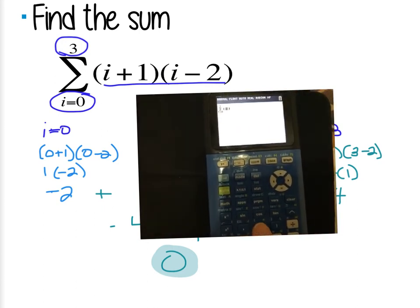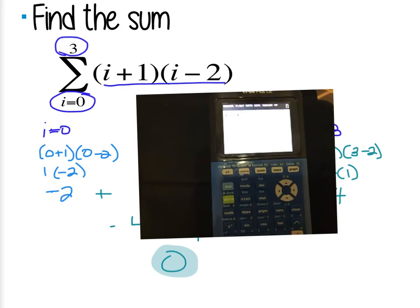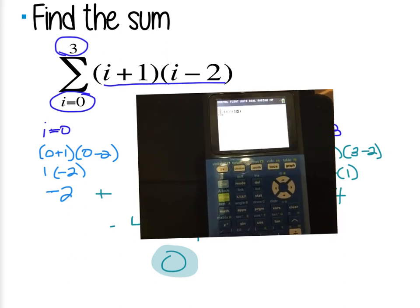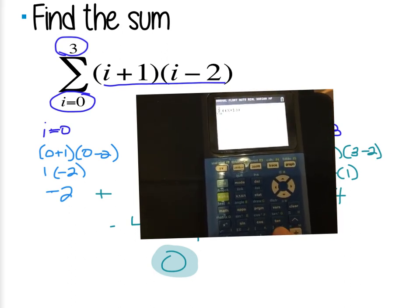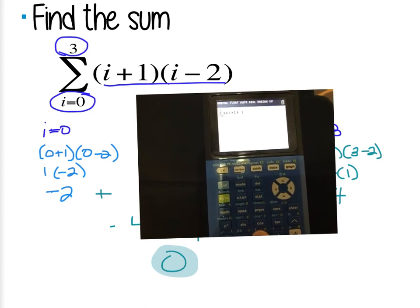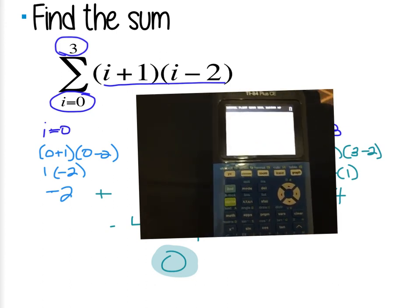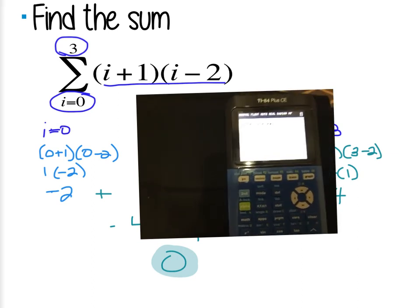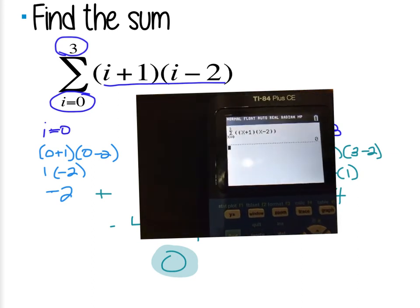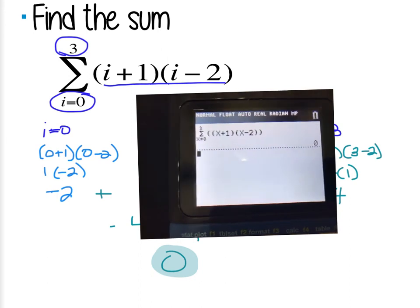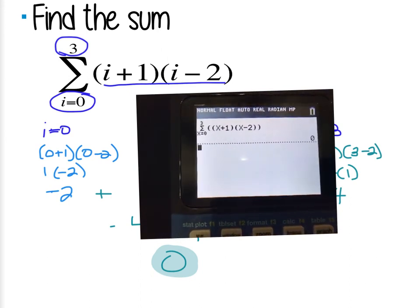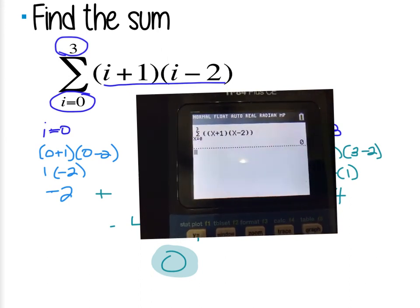And then we're going to go over into the parentheses, and we're going to put what's there, which is, I'm going to open the parentheses, x plus 1, close those parentheses, open the next set of parentheses, x minus 2. And then hit enter, and there's the summation, so it's automatically going from 0 to 3 and adding them together, which is 0.